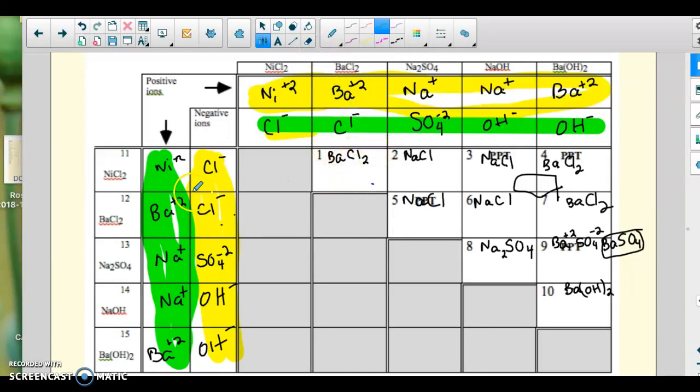So here I'm going to put the nickel with the chloride. Nickel is plus 2, chloride is minus 1. So I need to have 2. Here I'm going to put nickel with sulfate. This is another one of those where nickel is plus 2, sulfate is minus 2. So I just need 1 of each.